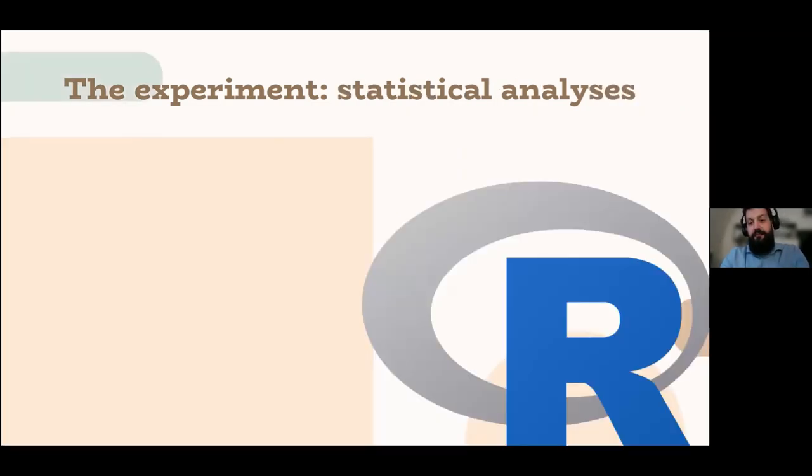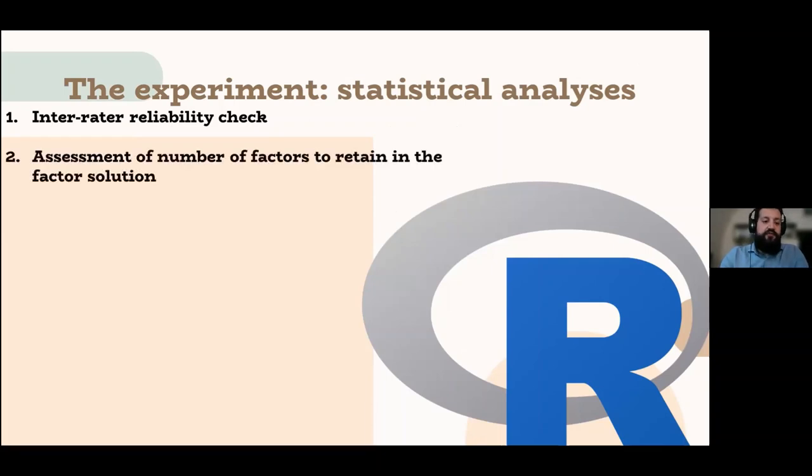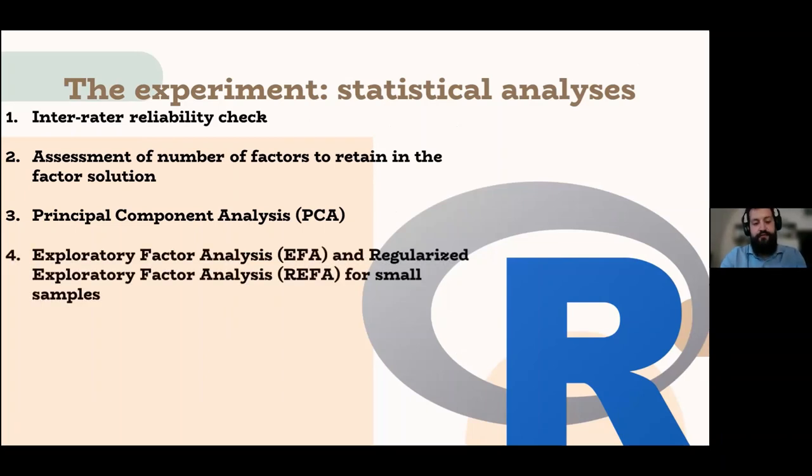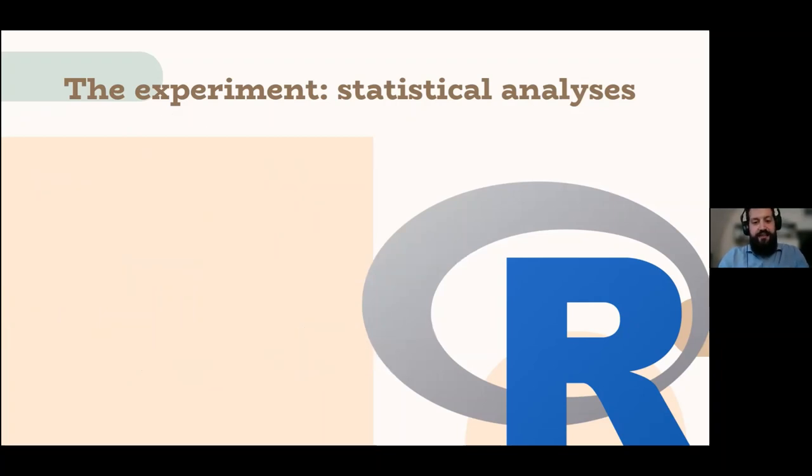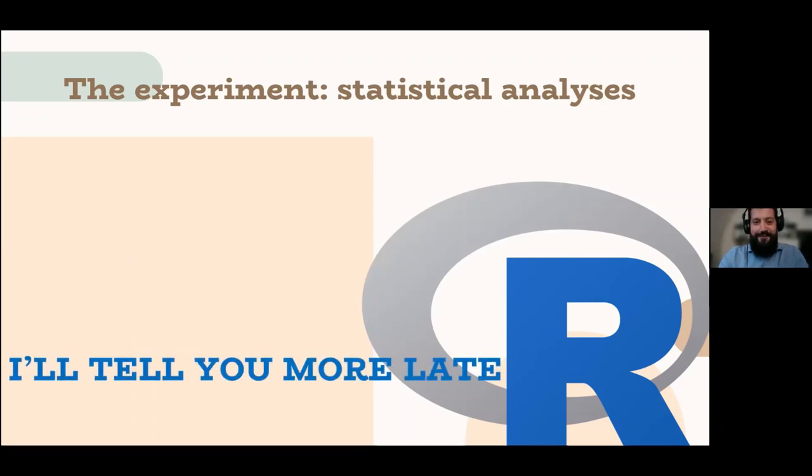Briefly, which kind of methods we use for the statistical analysis. We first checked inter-rater reliability, and eventually assessed the number of factors to retain in the factor solution, and ran a PCA, a principal component analysis, corroborated by exploratory factor analysis and regularized exploratory factor analysis, just to be on a safer side because our sample was rather small. Last, we looked for correlation between the Clutton-Brock index of each deer and the mean scores of the items that we thought would have been somehow relevant for the constitution of the hierarchy. So basically, confident, aggressive, and submissive. As I said, this is just an overview on the statistics because there is not much time to describe it more in detail, but if you have any questions, I can tell you more later.